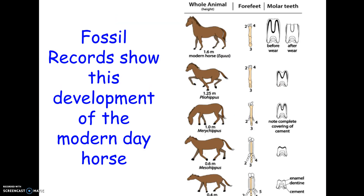Here's another example. If we look at the ancestor to the modern-day horse, fossils that we've dug up can show how that horse originated as an organism that perhaps looked a lot like a dog with multiple toes, and then through evolution became the horse of today — giving us an idea of how the feet and the teeth have changed.